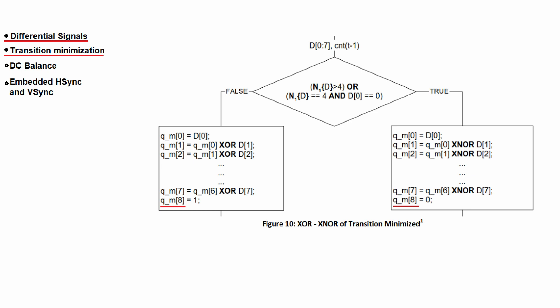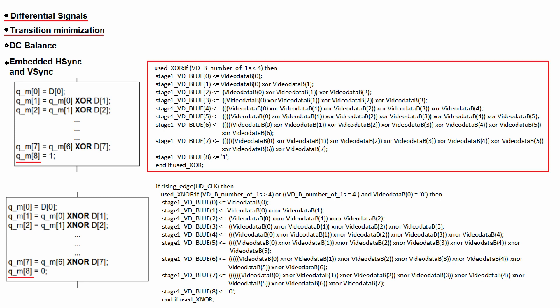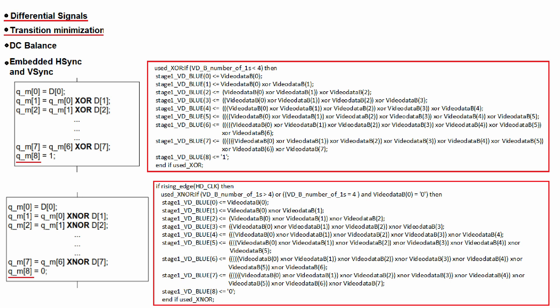After XOR or XNOR, an additional bit QM8 is used to mark which method was used. If XNOR was used, QM8 is marked 0; if XOR was used, QM8 is marked 1. This is the VHDL implemented code for XOR of the stream, and similarly this is the implemented code for XNOR.